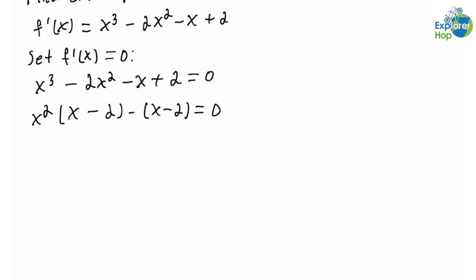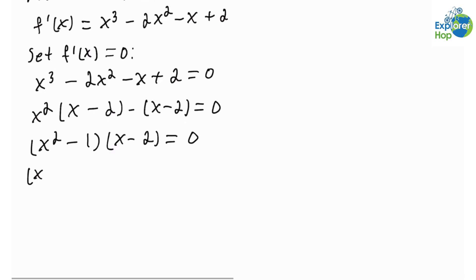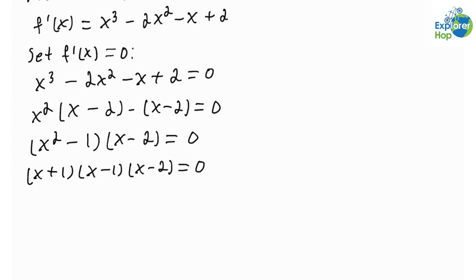Common factoring out (x − 2), we get (x² − 1)(x − 2) = 0, which means (x + 1)(x − 1)(x − 2) = 0. So x = −1, x = 1, and x = 2.